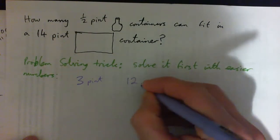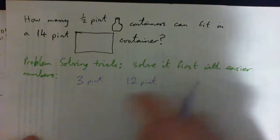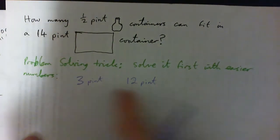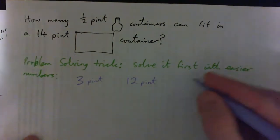Tell me the answer. How many of these do we need to fill up this container? The answer is 4. How did you get that? 12 divided by 3 gives 4.